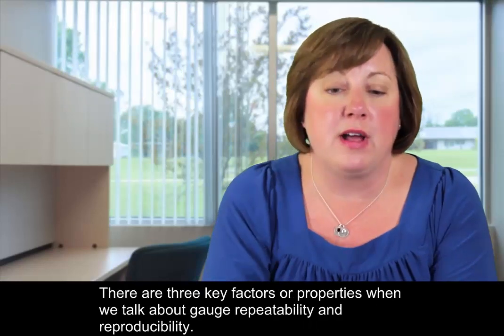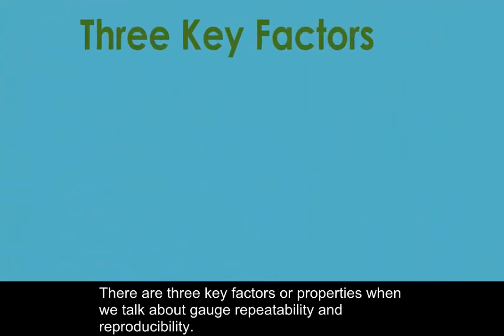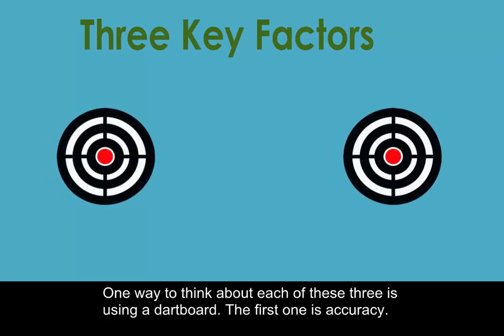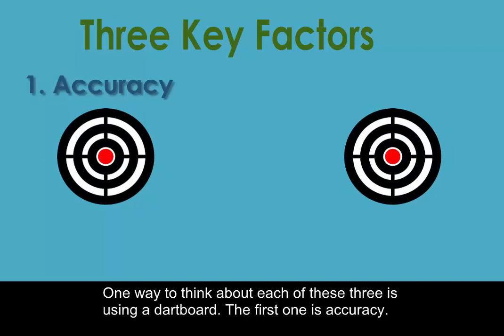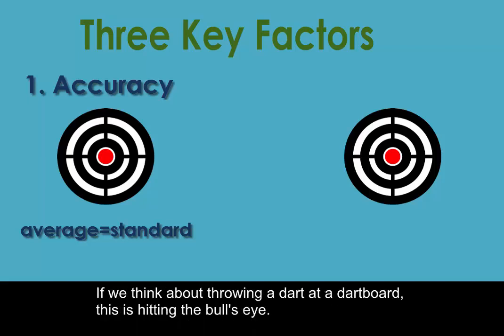There are three key properties when we talk about gauge repeatability and reproducibility, and one way to think about each of these three is using a dartboard. The first one is accuracy — the ability to produce an average measured value that agrees with the true or standard value being used. If we think about throwing a dart at a dartboard, this is hitting the bullseye.